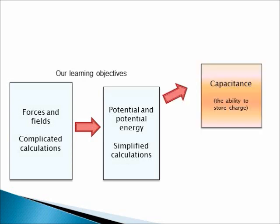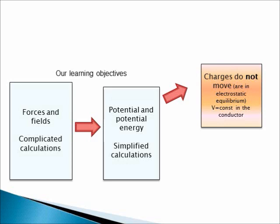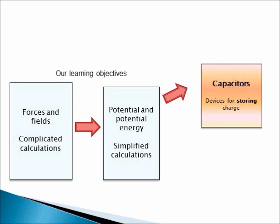We already applied the theory of electric potential to study the ability to store charge, or capacitance. When studying capacitance, we assume that charges do not move, or are in electrostatic equilibrium. Of course, charges always move at the microscopic level, but we did not see any pronounced motion of charge from one part of the conductor to another. When the net charge does not move in any observable way, the total force on the charge is approximately zero, implying that the potential is approximately conserved throughout the whole conductor. We also discussed capacitors — devices for storing charge — and calculated their capacitance.